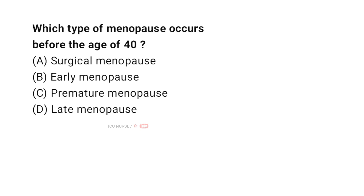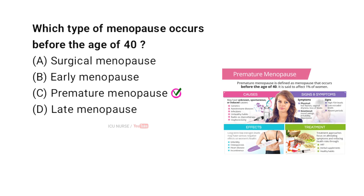Which type of menopause occurs before the age of 40? A. Surgical menopause. B. Early menopause. C. Premature menopause. D. Late menopause. And the correct answer is C. Premature menopause. Menopause that occurs before the age of 40 is called premature menopause, also known as premature ovarian insufficiency. It happens when the ovaries stop functioning earlier than usual, leading to a drop in hormone levels and the end of menstruation, and can occur naturally or be triggered by medical treatments.